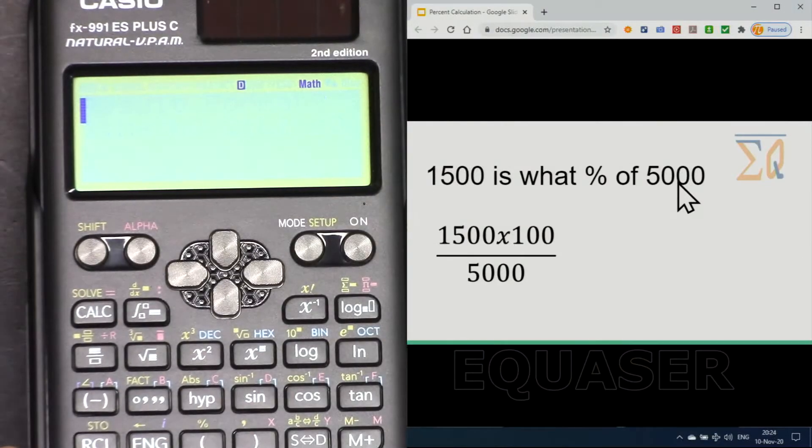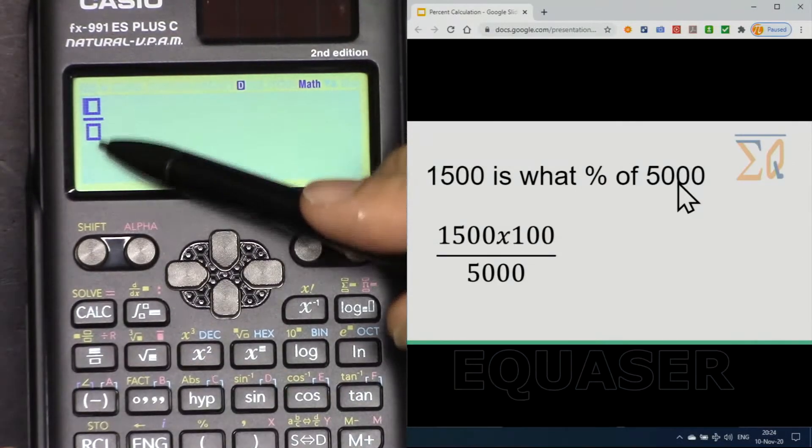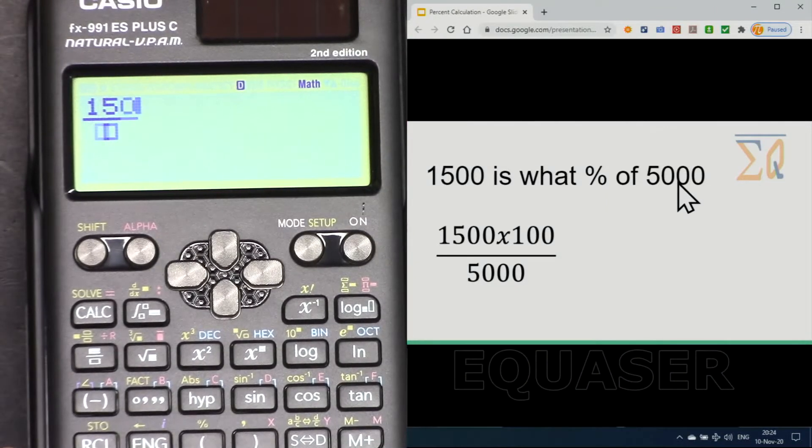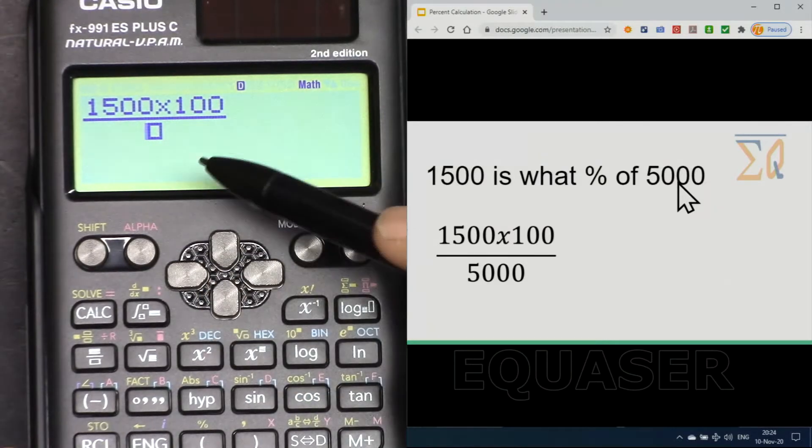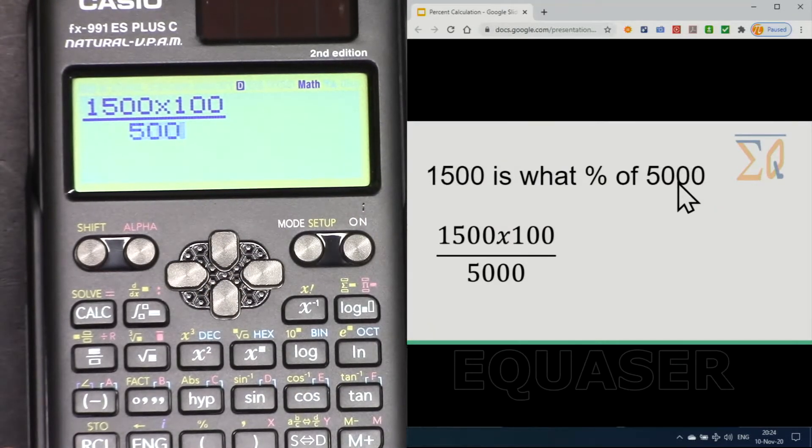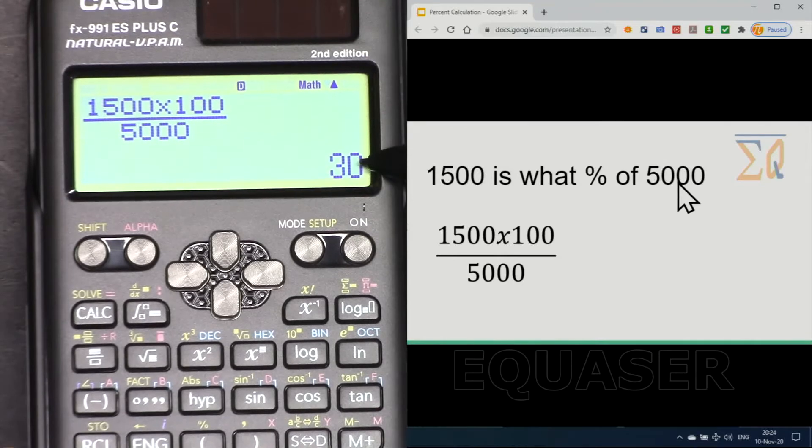Now if I press this, you will see the division sign: 1500 times 100. Then with the arrow, come to the denominator and enter 5000, and the answer is 30.